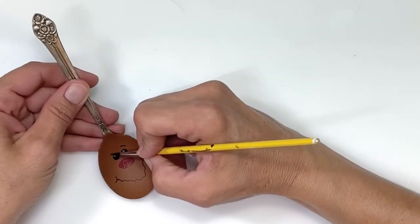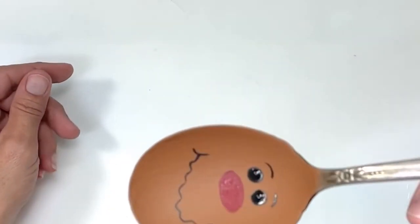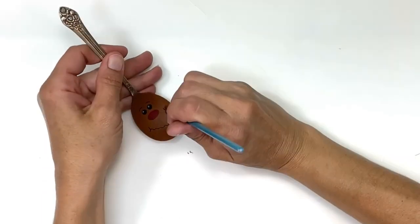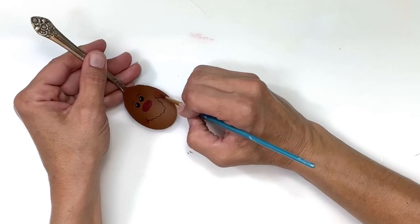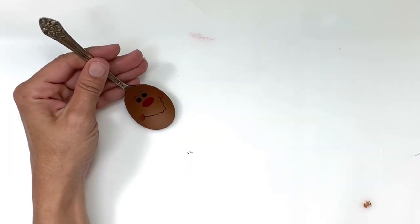Next I'm going to take some more of that black paint and do a couple of eyebrows, one above each eye. Next I'm going to take a little bit of the color red that I did for the nose and give him some rosy cheeks.